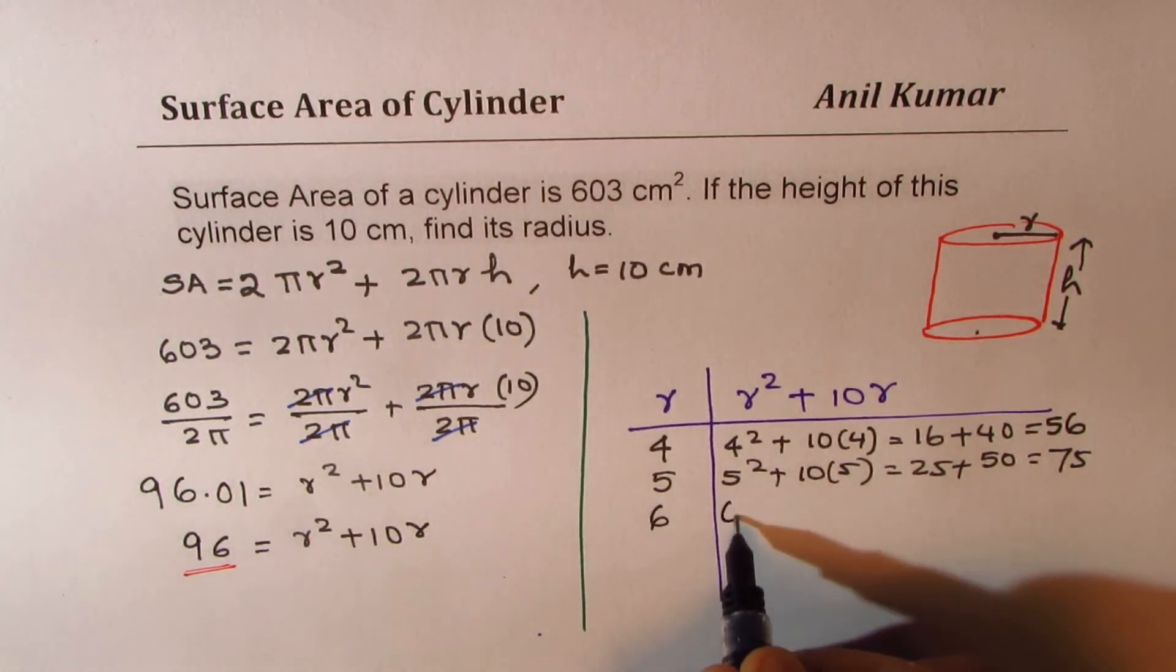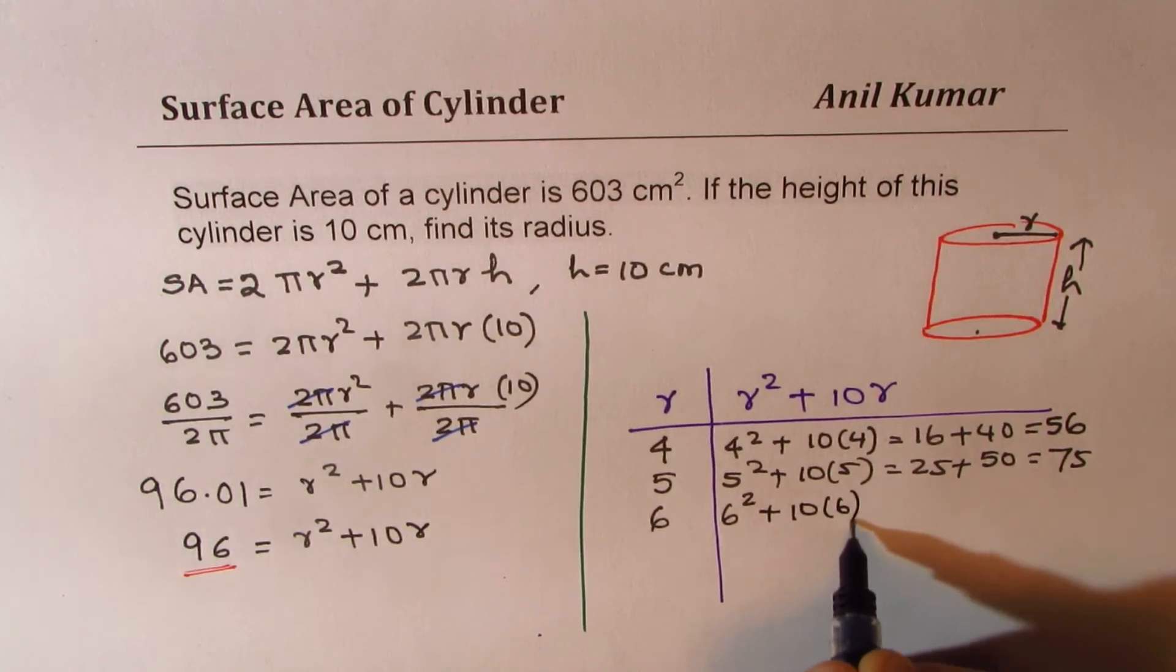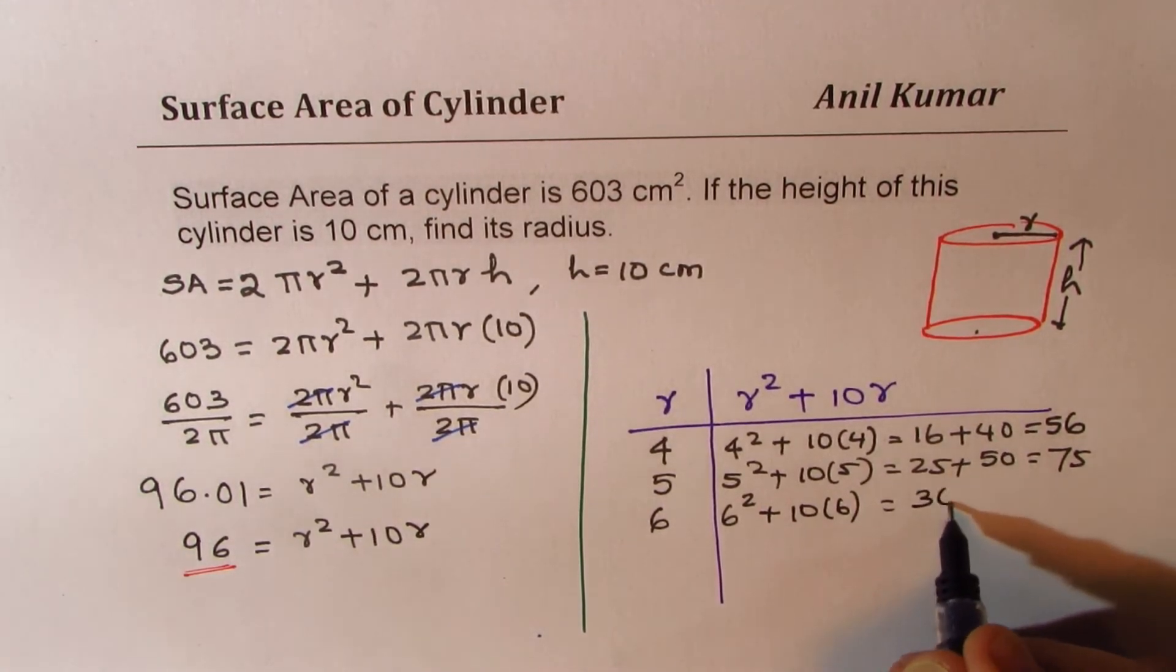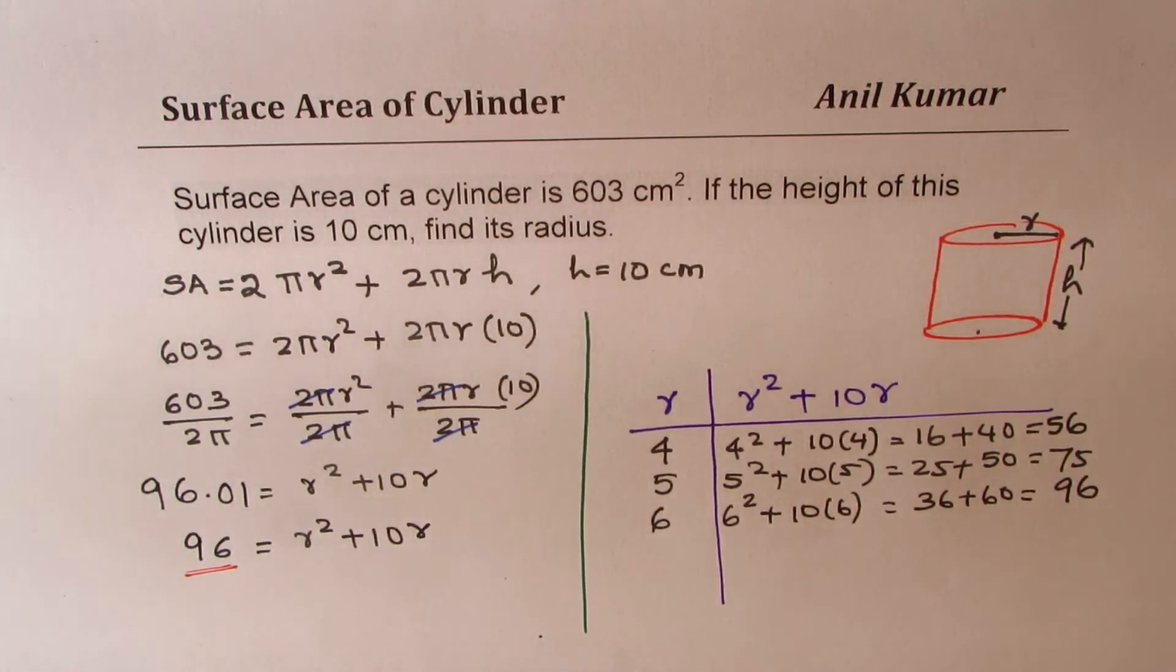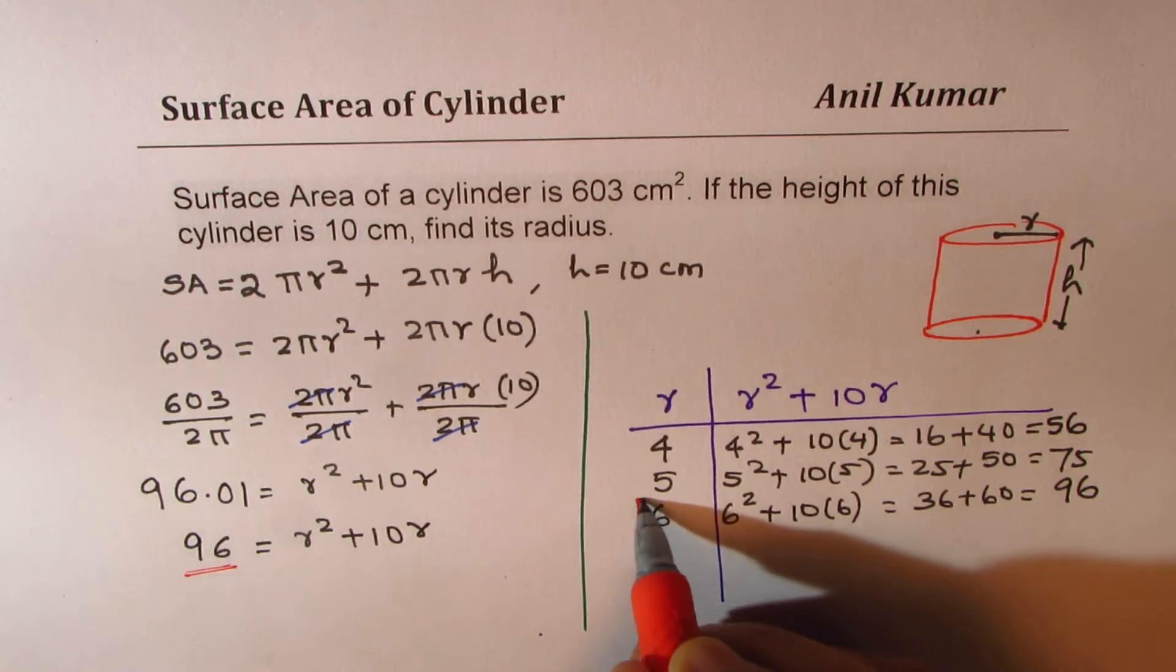If I take 6, I get 6² plus 10 times 6, which is 36 plus 60, and that gives you 96. Do you see that? So we finally get 96 for r equals to 6.